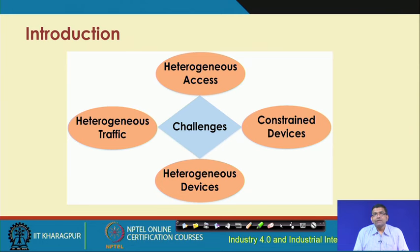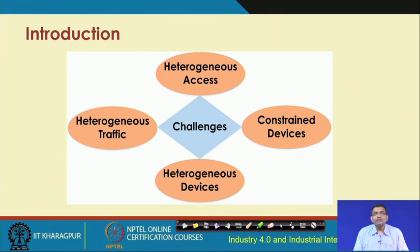From a holistic viewpoint, the challenges can be classified into different types. We have challenges with respect to access - there is heterogeneous access and heterogeneous traffic flowing through these networks - there is heterogeneity in the devices, vendors, specifications, standards, and protocols. The devices working in these networks are constrained in all respects: energy, processing, communication and so on. Heterogeneous access, heterogeneous traffic, heterogeneous devices, and constrained devices all holistically make the designing of these systems very challenging from a network point of view.